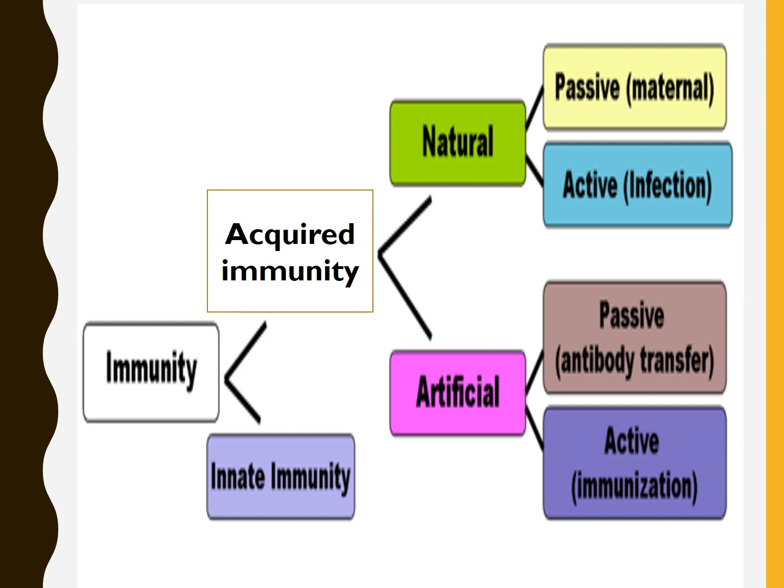Let us discuss the classification of immunity. It is of two types: innate and acquired immunity. Acquired immunity is divided into naturally acquired and artificially acquired immunity. Both natural and artificial are again divided into passive and active. Passive natural immunity is acquired through the mother via the placenta. Active natural immunity is acquired after exposure to certain infections such as smallpox or chickenpox. Passive artificial immunity is acquired through direct introduction of certain antibodies. Active artificial immunity is acquired through immunization, especially vaccines.